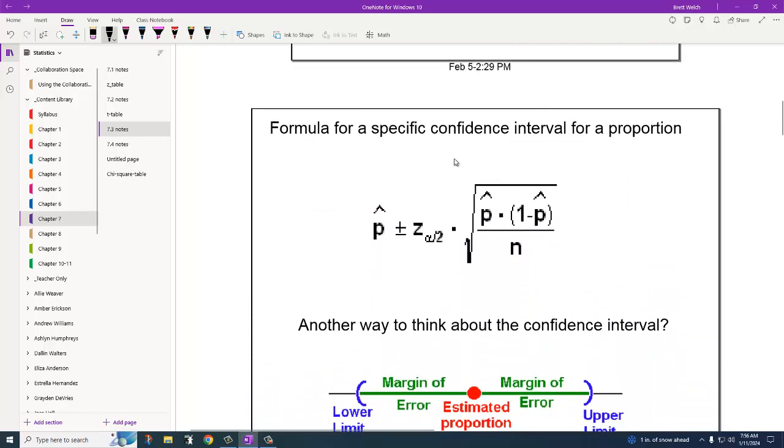To calculate the confidence interval for proportion, we take P hat plus or minus the Z of alpha over 2. That means we're doing a Z interval. We can't do the same Z interval test that we did on the calculator in previous sections. Alpha over 2 is because we're cutting it on each tail. If I want a 95% confidence, then I've got 2.5% on each end. We times that by P hat times 1 minus P hat. But 1 minus P hat, you could replace that with just Q hat. And N is the number of people in the sample size.